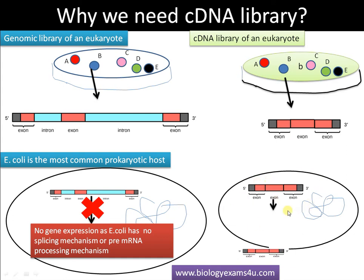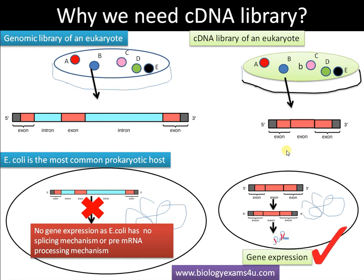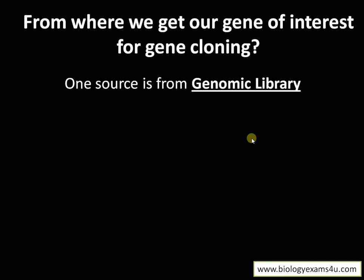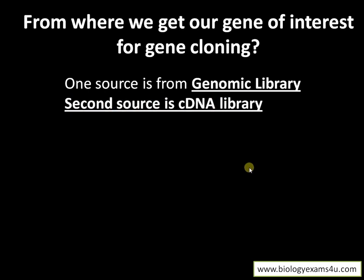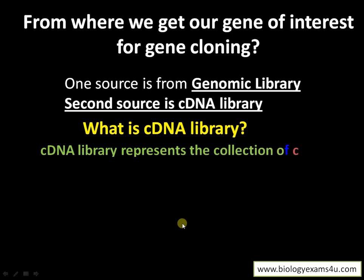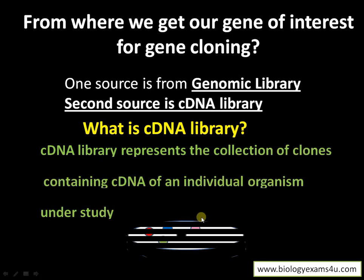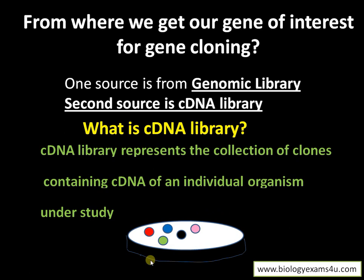The prokaryotic host can transcribe and translate cDNA into protein very easily, since there are only exons. So for gene expression of a eukaryotic gene inside a prokaryotic system, the choice is the cDNA library. The primary source for gene cloning is the genomic library, but it has many limitations — that is why we have the cDNA library, which is simply a collection of clones containing cDNA of an organism under study, maintained as colonies.